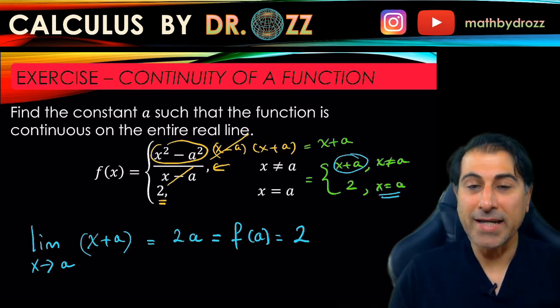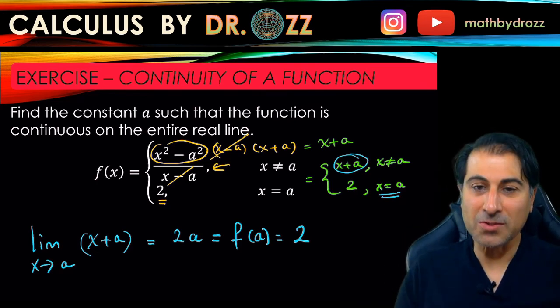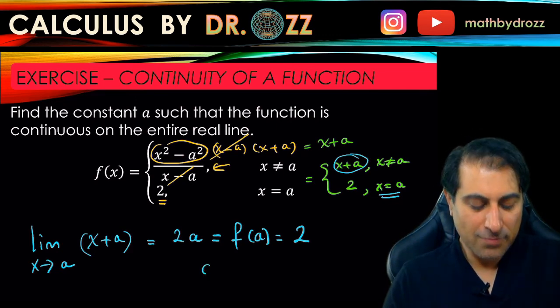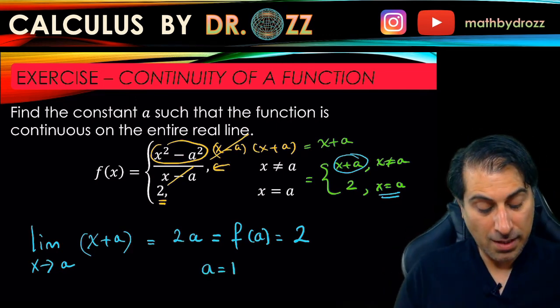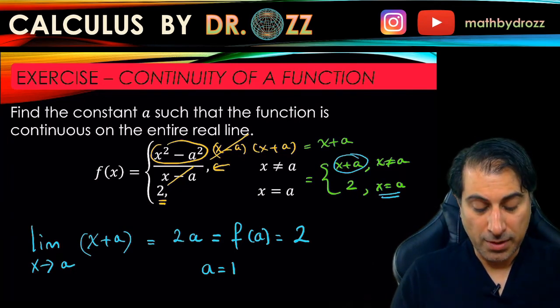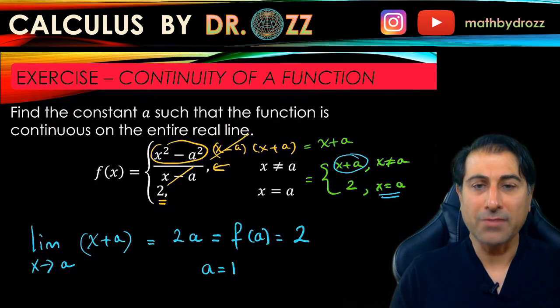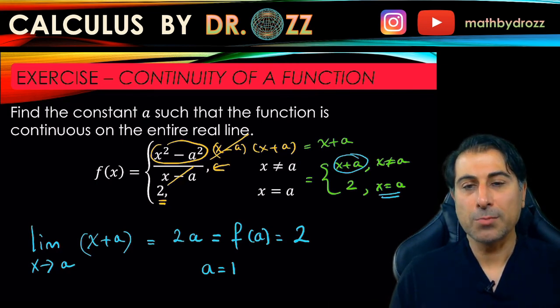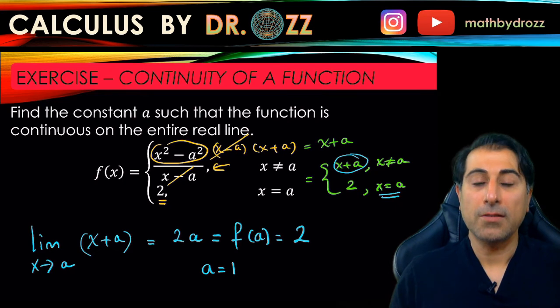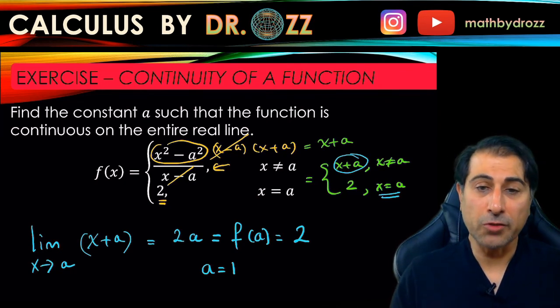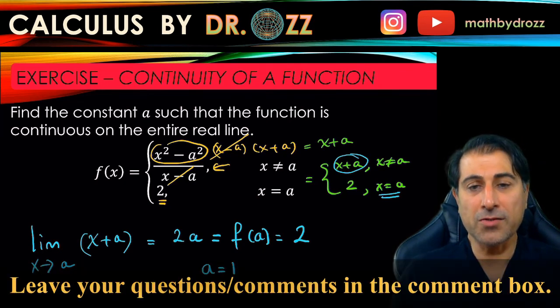This tells us exactly what a is supposed to be because 2a must be equal to 2. So that results in a being 1. This is a must-have type condition for f to be continuous because the limit value has to be equal to the function's value at that point. And if a equals 1, then f is continuous. Otherwise, any other values of a will make the function discontinuous.